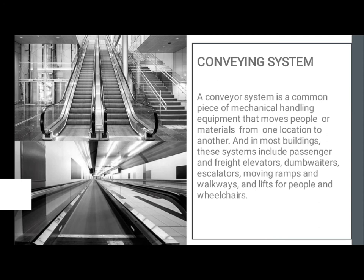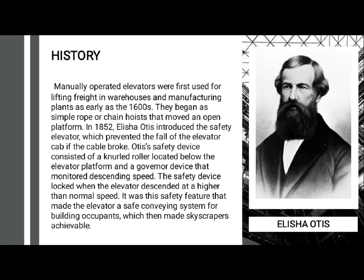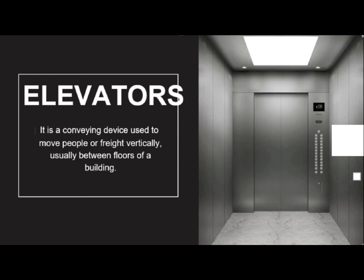Let's take a sneak peek at the history of the subject matter. In 1852, a genius named Elisha Otis brought the safety elevator to the world, preventing the fall of the elevator cab if the cable broke. It is just as important as the invention of manually operated elevators, which were primarily used for lifting freight in warehouses and manufacturing plants as early as the 1600s. The safety device consisted of a knurled roller located below the elevator platform and a governor device that monitored descending speed, locking when the elevator descended faster than normal. This safety feature made the elevator a safe conveying system for building occupants.